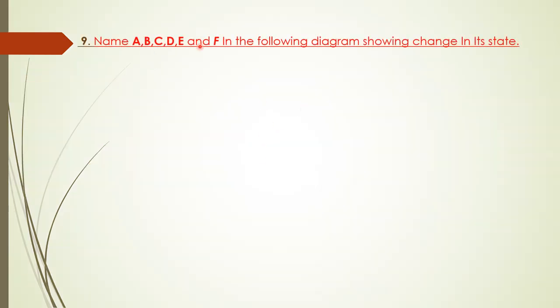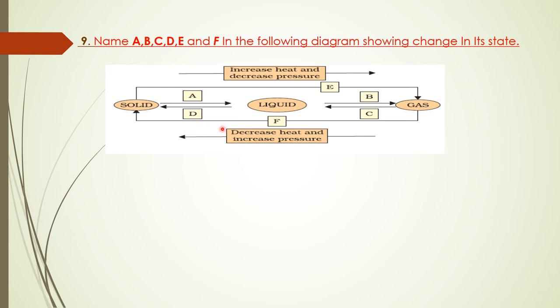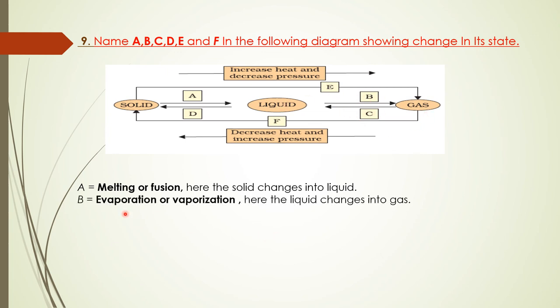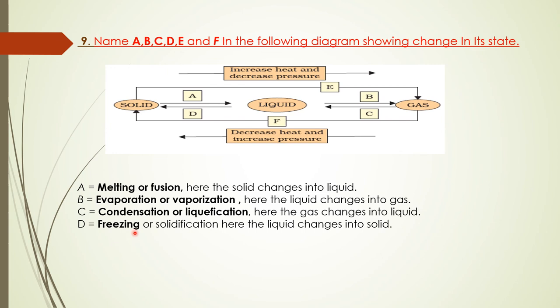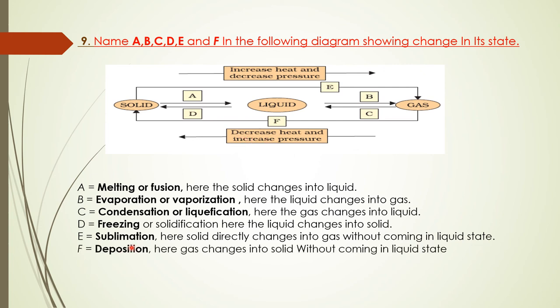Question 9: Name A, B, C, D, E, and F in the following diagram showing changes in state. A is solid to liquid, so the process is melting or fusion. B is liquid to gas, so the process is evaporation or vaporization. C is gas to liquid, so the process is condensation. D is liquid to solid, so the answer is freezing. E is heat increase, pressure decrease, solid to gas, so the process is sublimation. F is heat decrease, pressure increase, gas to solid, so the process is deposition. Thank you.